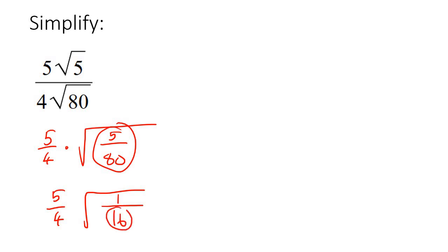Now, the square root of six—actually, the square root of one is one, and the square root of 16 is four. So we could write this as five over four multiplied by one over four, and so top times top, bottom times bottom, that's your answer.